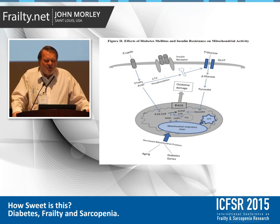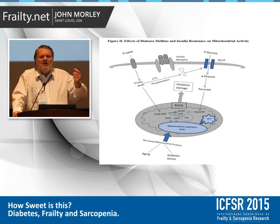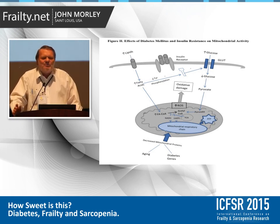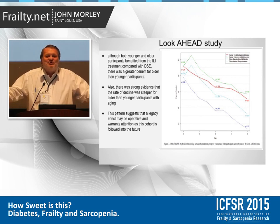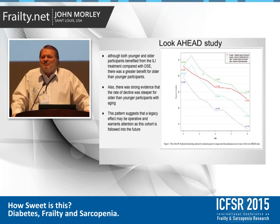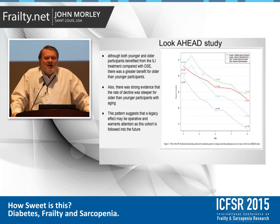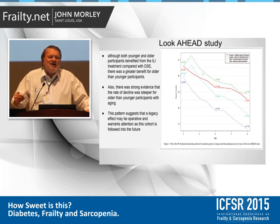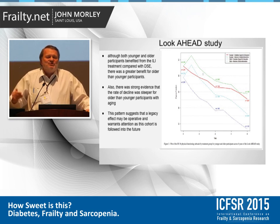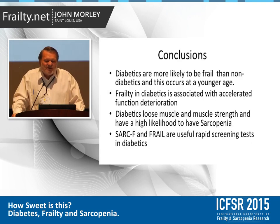Diabetics also accumulate triglycerides, and that accumulation is not adequately handled by the mitochondria, resulting in decreased energy production. And how do you fix all of this? The Look AHEAD diabetic study showed that what worked was lifestyle — predominantly exercise. Interestingly, older diabetics did better with exercise than younger ones. Exercise essentially fixes every single one of those mechanisms I described.